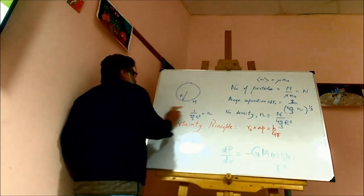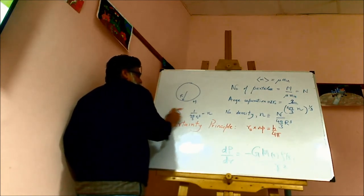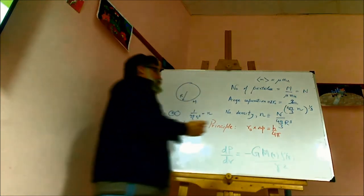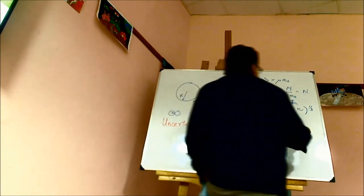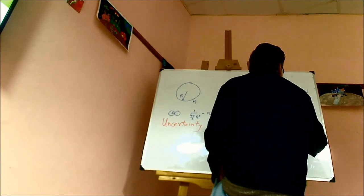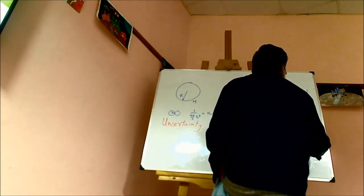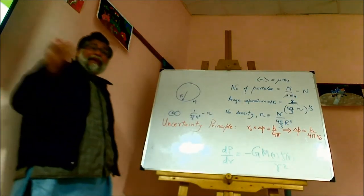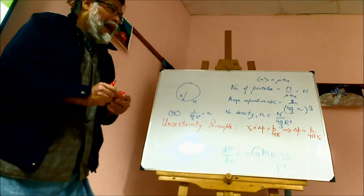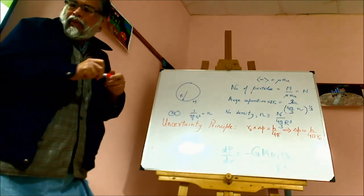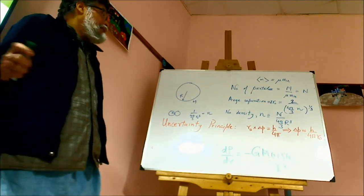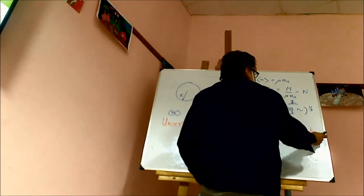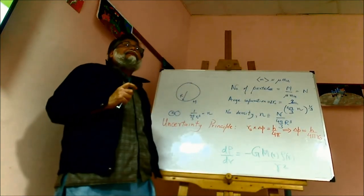R0 is the uncertainty in the position of either the electron or the proton, and delta_P is the momentum uncertainty — the jiggling in momentum. If the number density is very low, R0 is very large and delta_P will be very small. But for a white dwarf, the density is huge, so R0 is small, and the uncertainty in the momentum becomes very large.